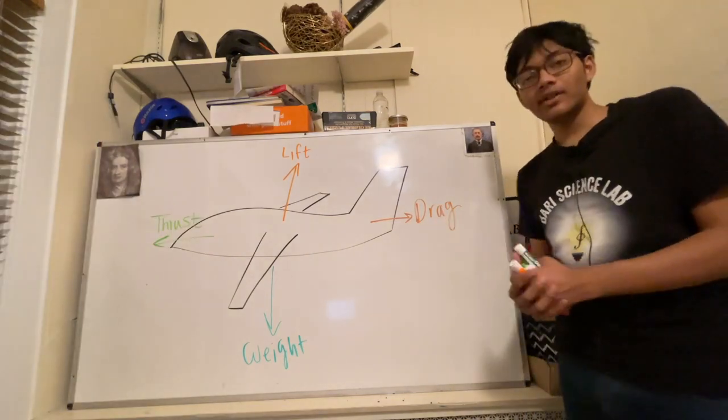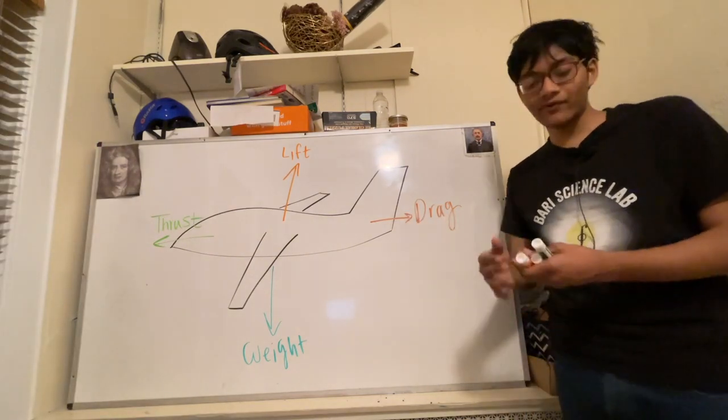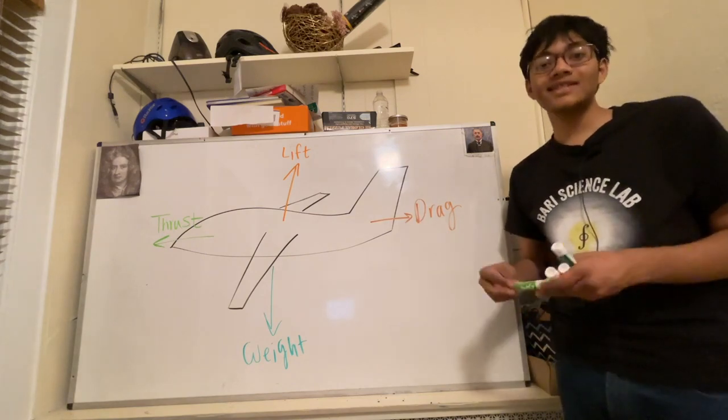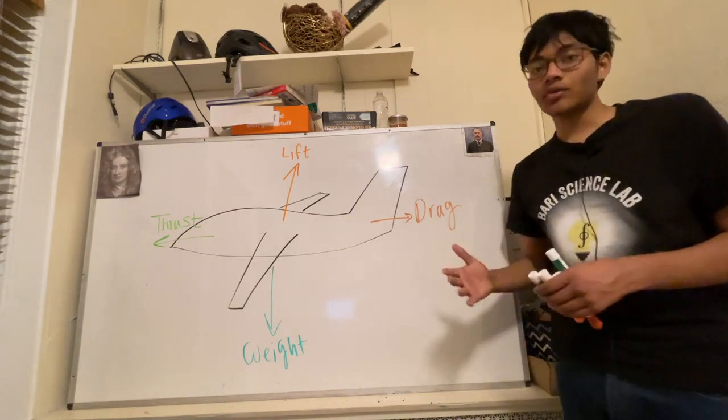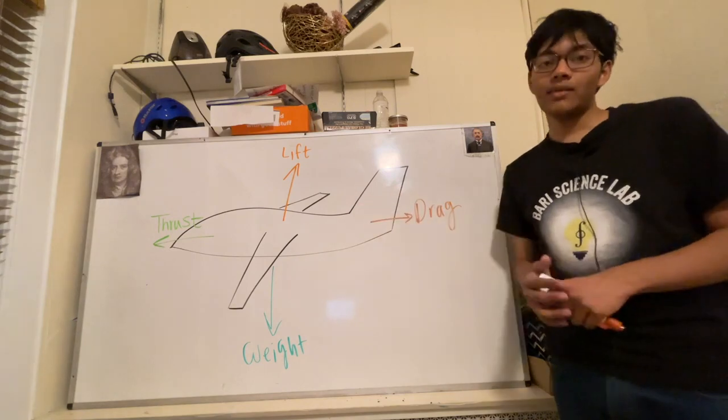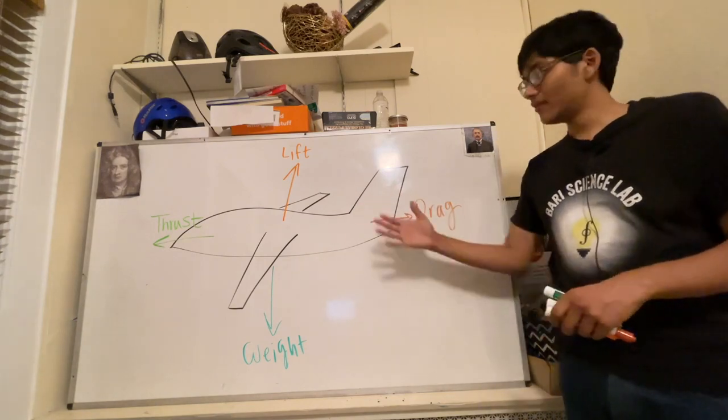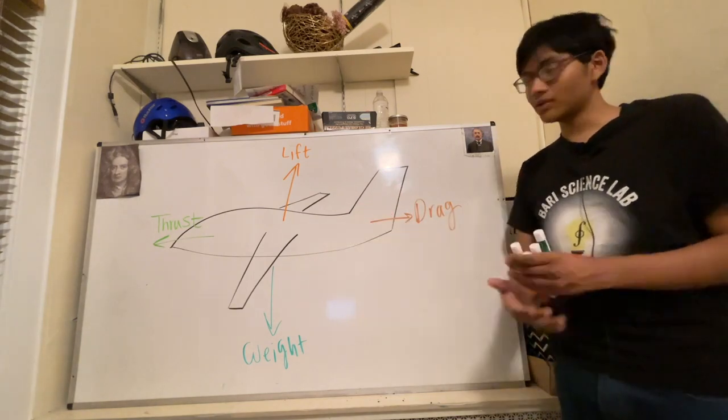These four forces, if they're in equilibrium—that is, the net force is zero—then the plane is stationary in the air. In other words, if the plane is moving, it'll keep moving with constant velocity. If it's at rest, it'll stay on the runway.